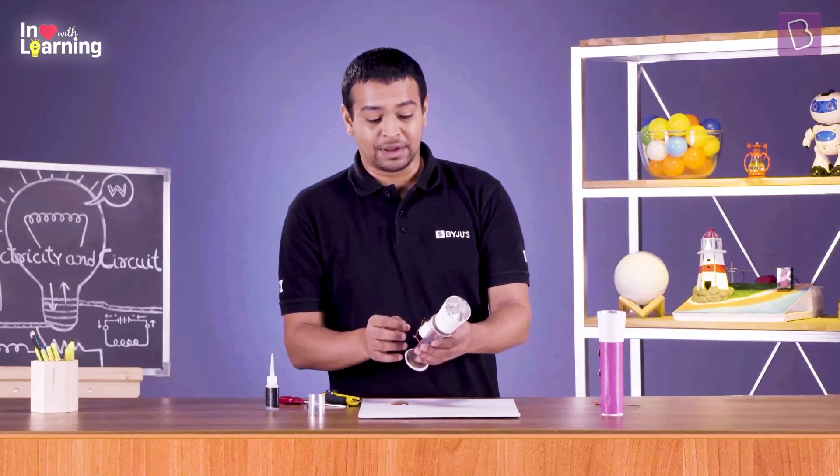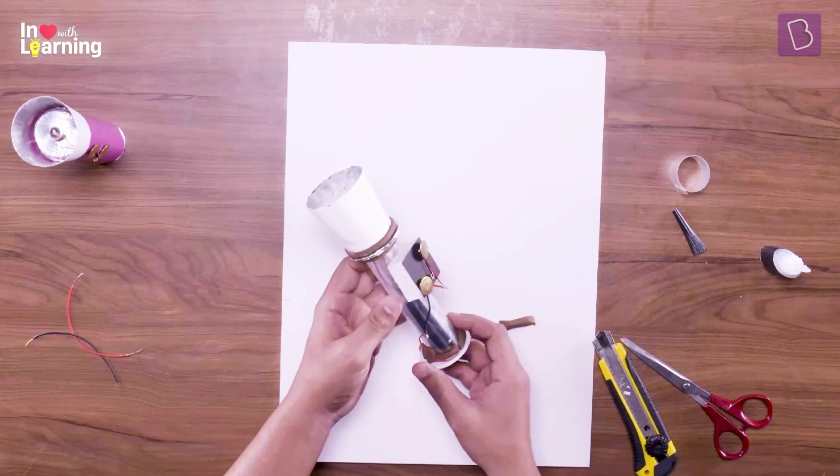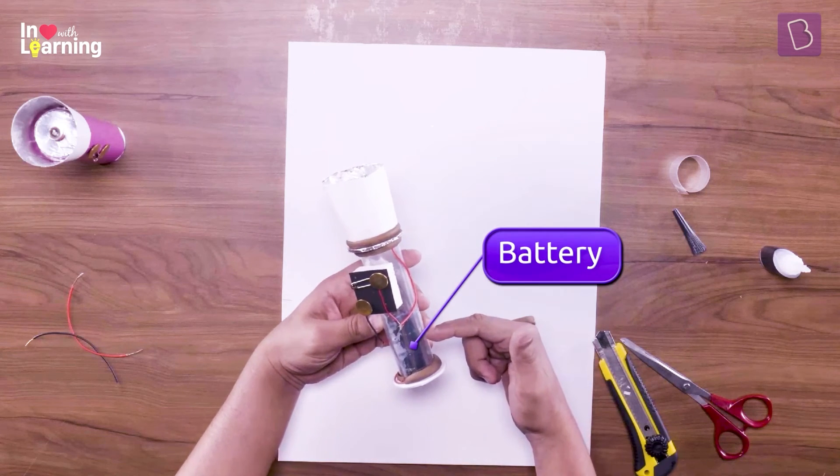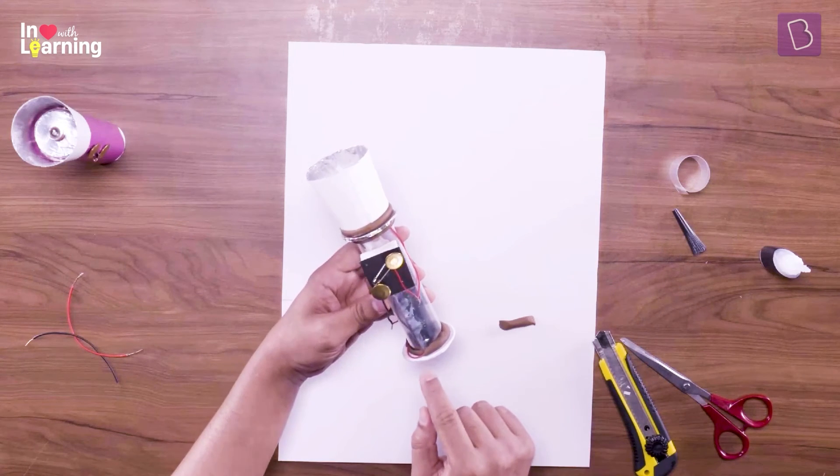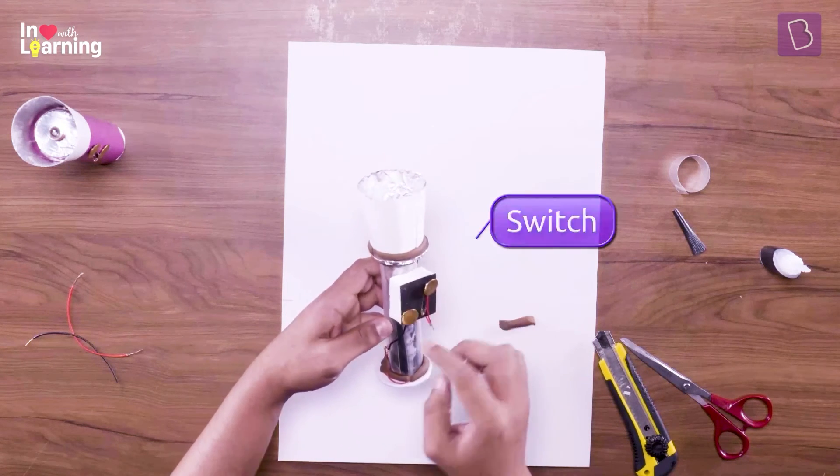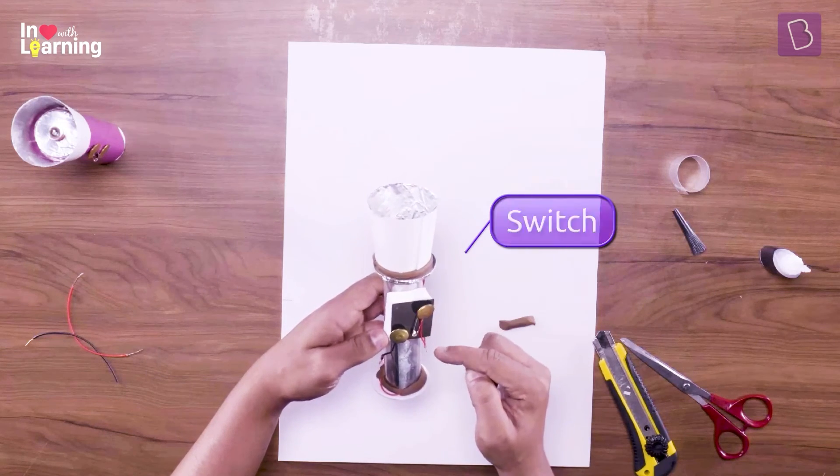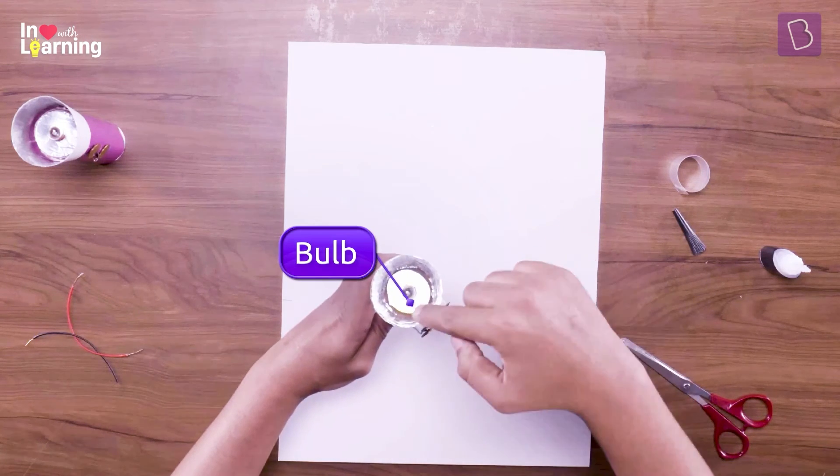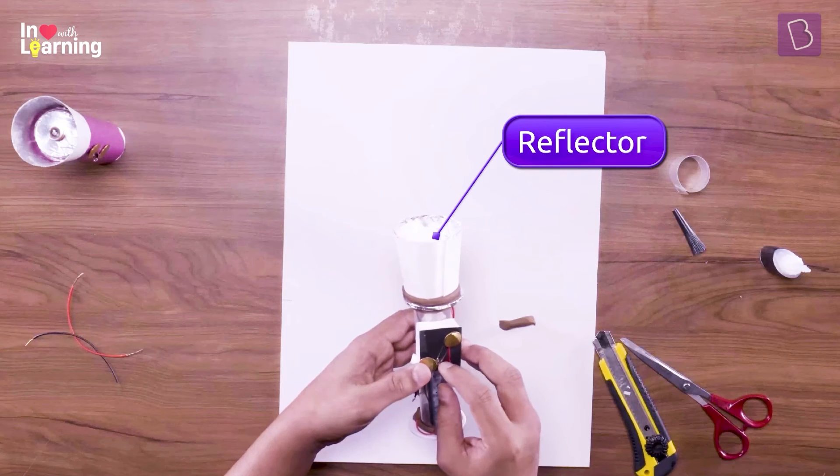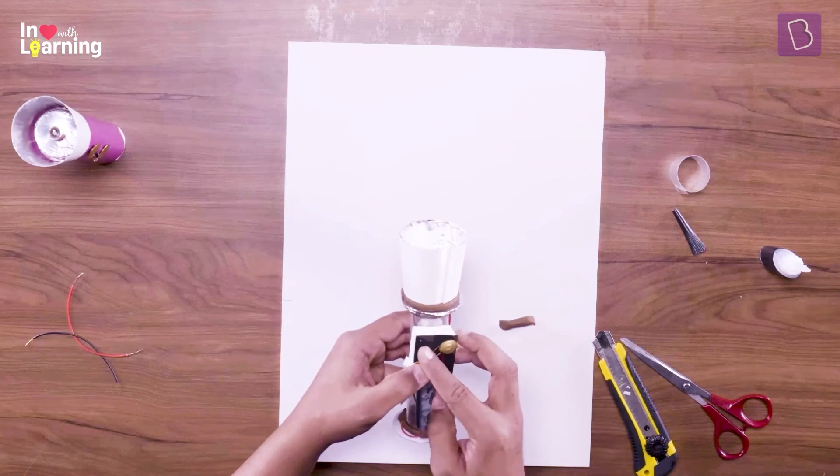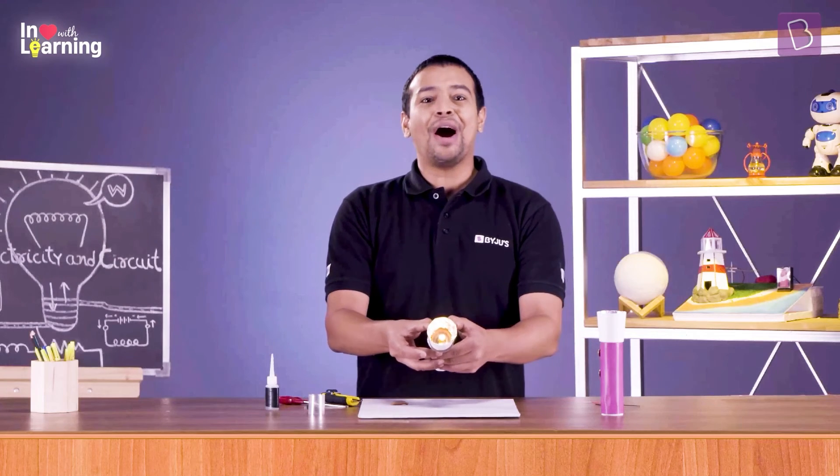And there we have it. Now for the moment of truth: look, there's a battery on the inside. One of its wires is coming outside and getting connected to the switch. The other end of the switch is connected to the bulb, which is housed inside this reflective casing. I hope this works. With the switch on... yeah!